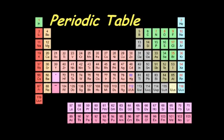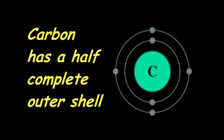The 92 elements of nature are listed in columns of similar elements. Each element has a need to attain a complete outer electron shell by gaining, losing, or sharing electrons with other elements.